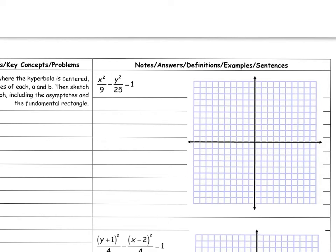We're gonna do the same thing. I'll find my center — there's nothing added to the x or y, so my center is at (0, 0). Then I want to find a and b. A is always with my x, and b is always with my y. So a squared equals 9, meaning a equals 3, and b squared equals 25, so b equals 5.